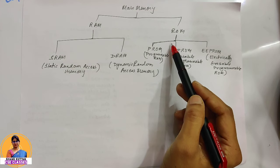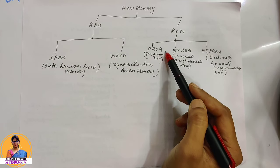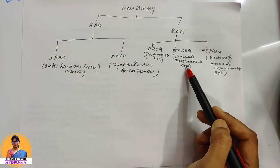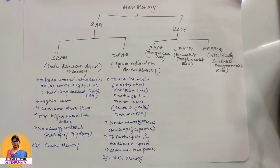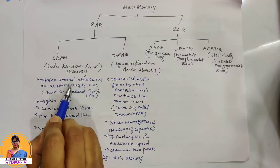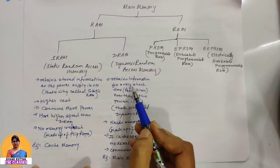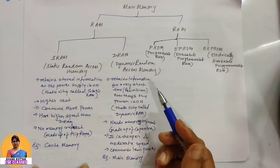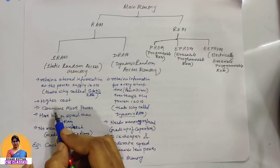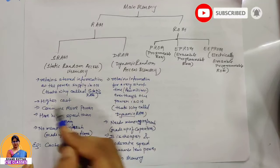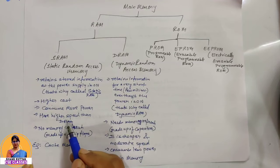In ROM, there are advanced versions. The categories of ROM will be discussed shortly. SRAM — whatever information is stored in SRAM, when the power is on, it keeps its data intact. That's why we call it static RAM. In DRAM, it retains information for only a very short time — a few milliseconds — even when the power is on. That's why it is called dynamic RAM. SRAM has a higher cost compared to DRAM, and SRAM consumes more power while DRAM consumes less power. SRAM speed is also higher compared to DRAM.